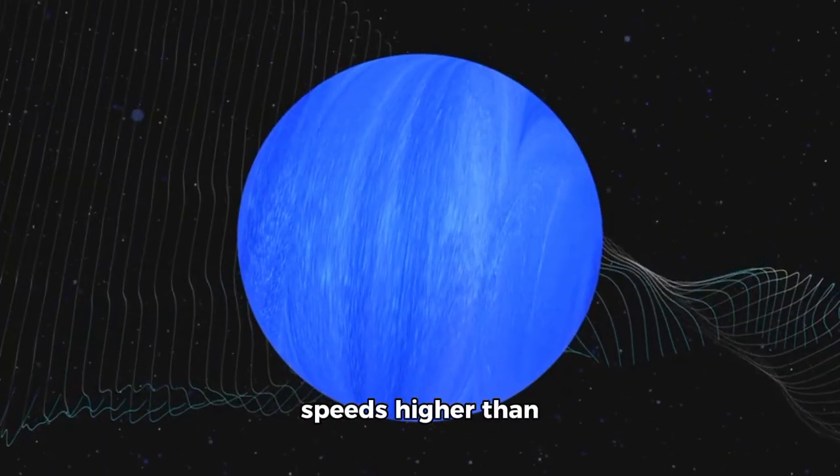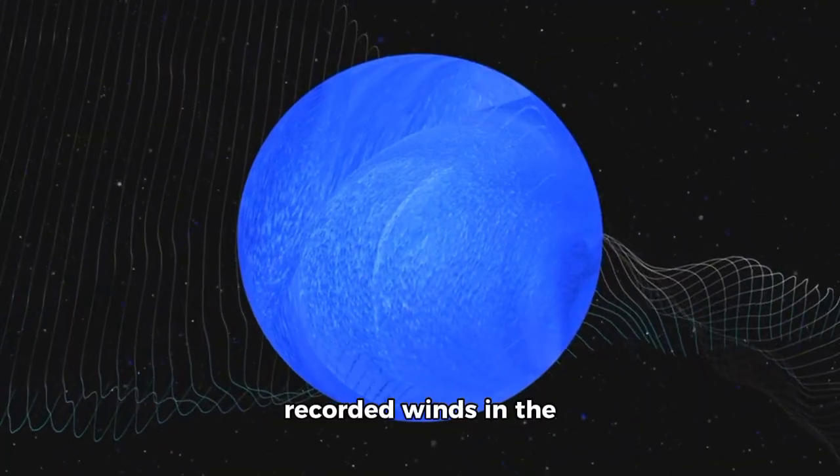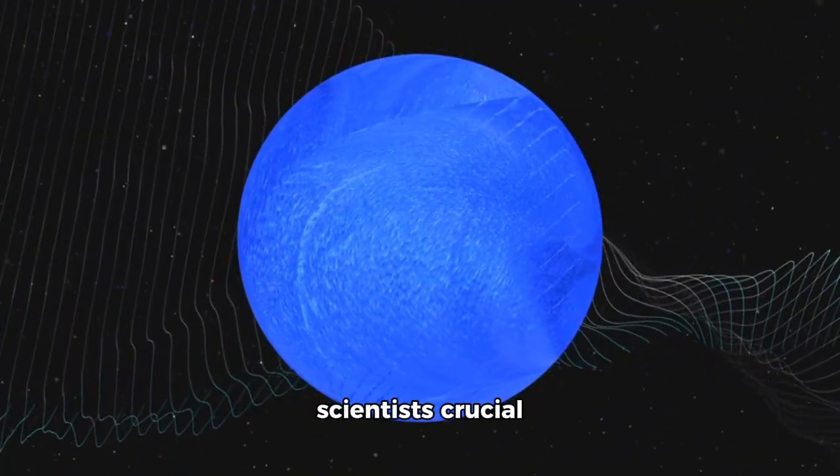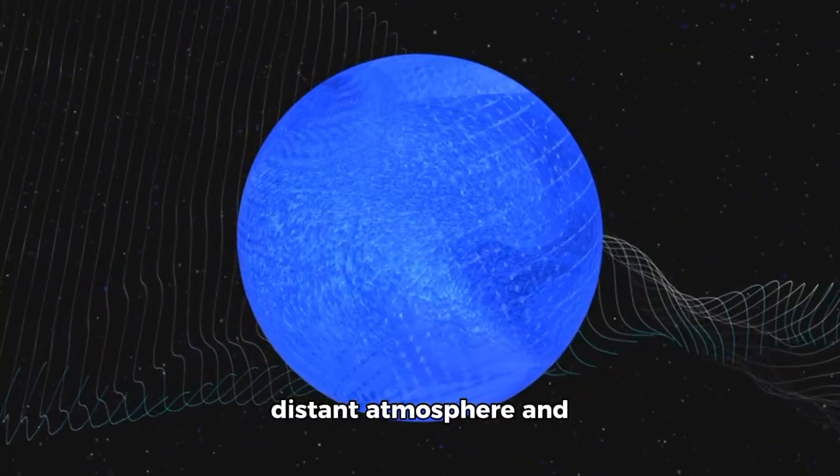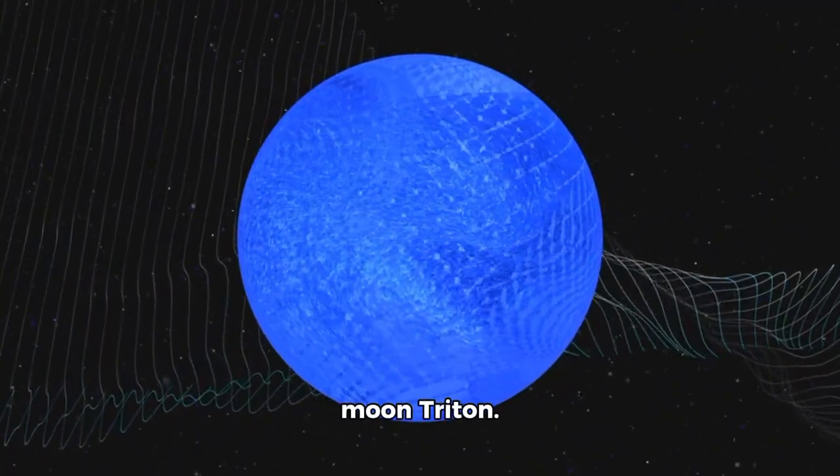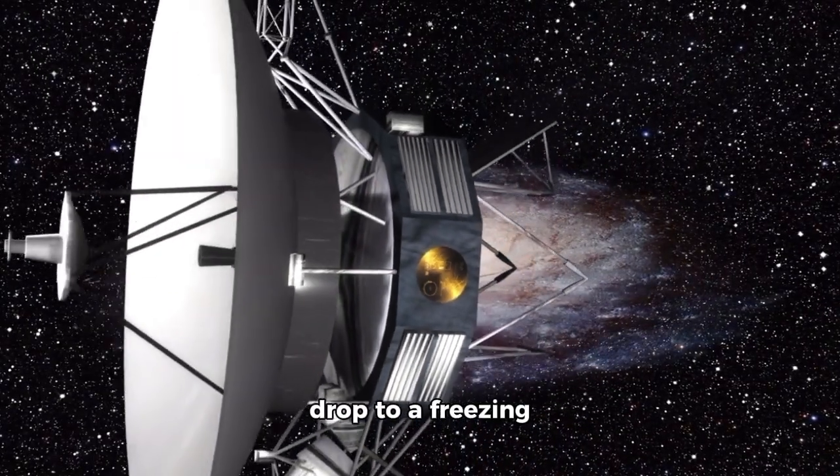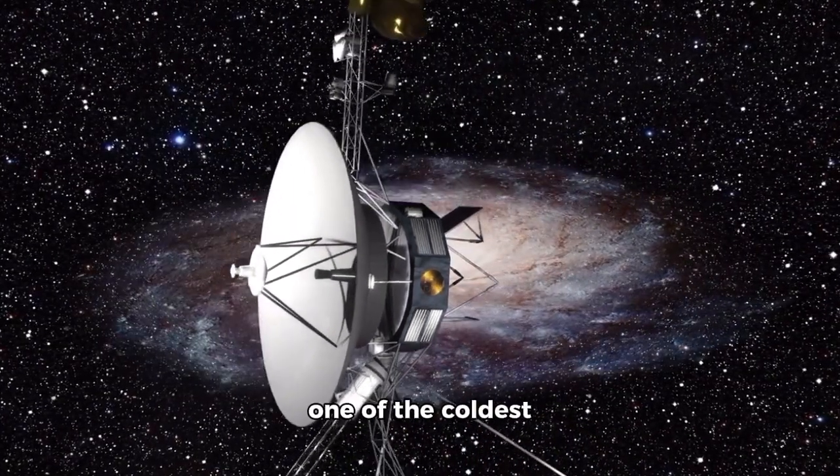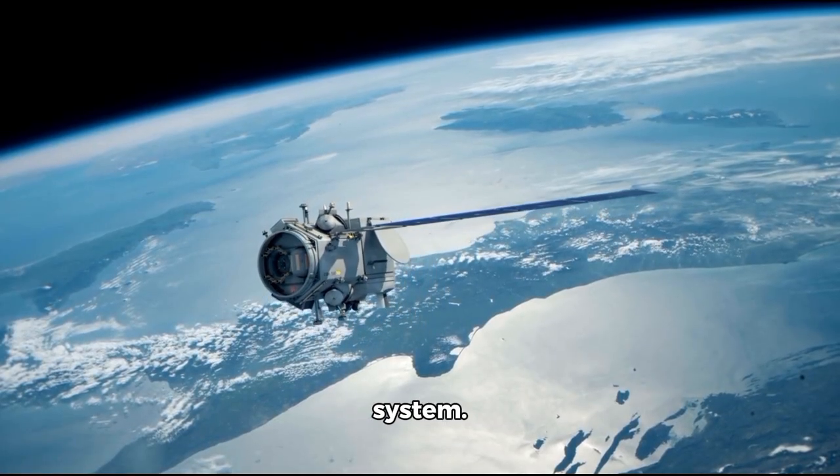It recorded wind speeds higher than 1,300 meters per second, the fastest recorded winds in the solar system, granting scientists crucial knowledge of Neptune's distant atmosphere and the location of its moon, Triton. Temperatures at Triton's surface dropped to a freezing minus 391 degrees Fahrenheit, making it one of the coldest spots in the solar system.